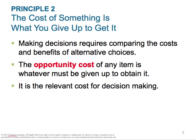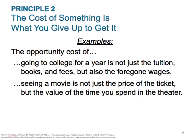Principle two is the cost of something is what you give up to get it. Making decisions requires comparing the costs and benefits of alternative choices. This is better known as opportunity cost. The opportunity cost of any item is whatever must be given up to obtain it — it is a relevant cost in decision making. For example, the opportunity cost of going to college is not just tuition, books, and fees, but also the foregone wages.